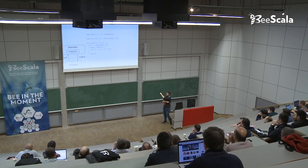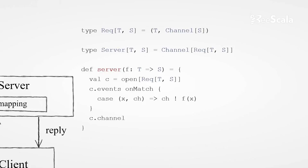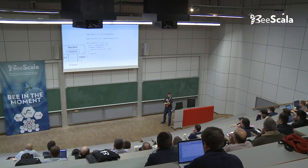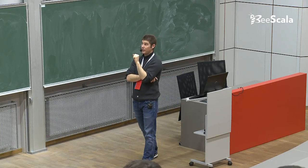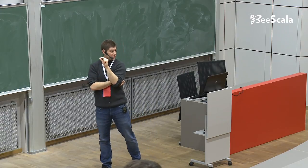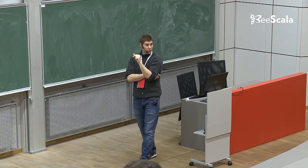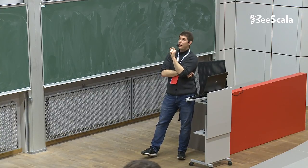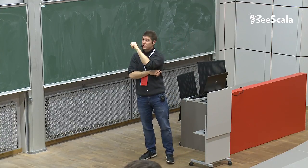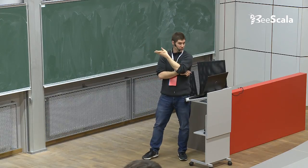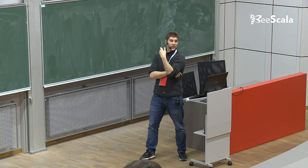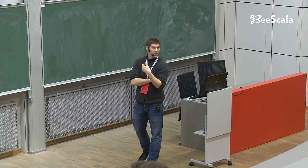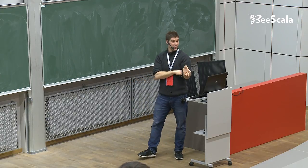The server method takes a generic mapping function f. First, open a channel of the request type from T to S. On the event stream, match the incoming tuples — each is a pair of a request x and a reply channel. Apply the mapping function to x to get a response, send it back along the reply channel, then return the server channel to the reactor that called this method.